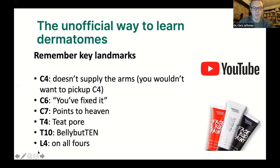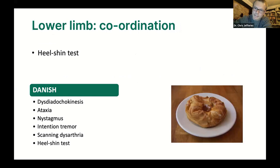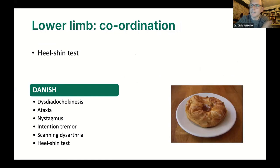For coordination in the lower limb, we use the heel-shin test. Ask the patient to run their heel down their shin from knee to ankle, then bring the leg up and do a big circle. It's a gross screening tool looking for ataxia — not very specific, but a useful quick screen. You might decide to perform this at the end of your lower limb examination.